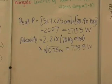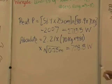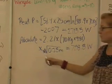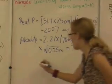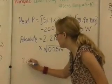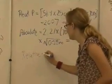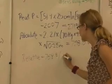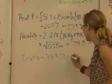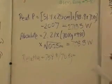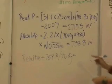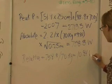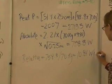To get his relative mean power, we'll then just take 758.8, which was his absolute, divided by his body mass. So, relative would equal 758.8 divided by 70 kilograms, and so we've got 10.84 watts per kilogram.